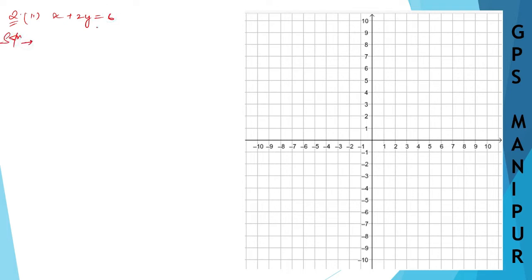Solution: x plus 2y equals 6, so x will equal 6 minus 2y when we rearrange the equation.